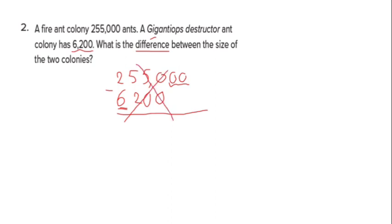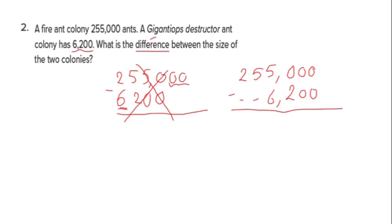How can we write the two numbers under each other? Write 255,000 first. For the second number, start from the ones place: zero under zero, then zero under zero, then 2 in the hundreds place, then 6 in the thousands place. The remaining top places stay empty — they act as zeros. Zero on the left has no meaning. When you do subtraction or addition, ones must be under ones, tens under tens, hundreds under hundreds, thousands under thousands and so on.